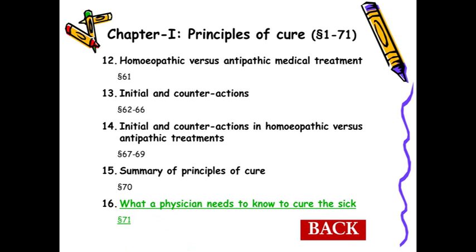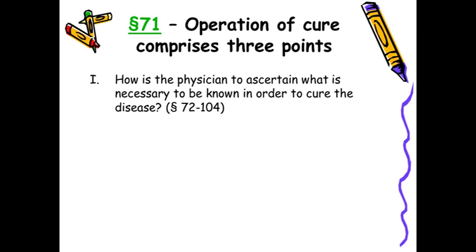Aphorism 71 is a link between the first 70 aphorisms and the subsequent aphorisms. There are three points described: the practical part of the Organon. First, up to aphorism 70 is the theoretical part, where all theory and basic principles have been explained; subsequently from aphorism 72 onwards the practical aspects have been covered.